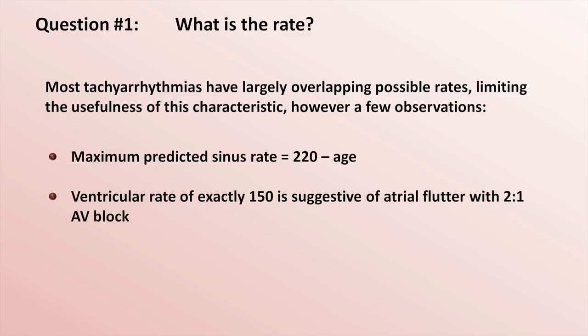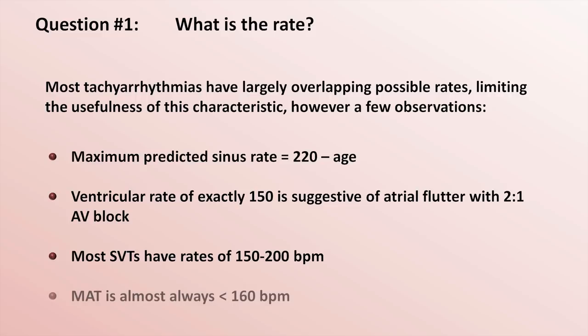Next, a ventricular rate of exactly 150 is suggestive of atrial flutter with 2-to-1 AV block. Certainly other rhythms can have rates of 150, and the ventricular rate in atrial flutter can be almost anything. However, it is surprising how often in practice an unknown arrhythmia with a rate of exactly 150 turns out to be a flutter. The third observation is that most SVTs have rates of 150 to 200 beats per minute. And lastly, multifocal atrial tachycardia is almost always less than about 160.